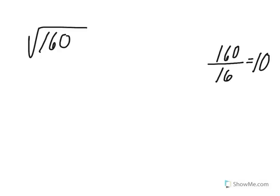You may have found that 160 divided by 16, which is a perfect square, equals 10. Now we're going to use the multiplication property of square roots and rewrite this square root of 160 into the square root of 16 times the square root of 10.